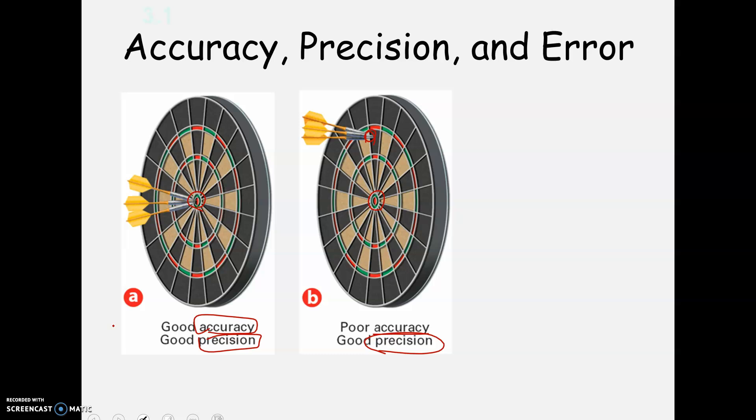But I think what you could have is you could have two people and they were both accurate, but one was more precise than another. In other words, we could both throw three darts and both of us hit close to the bullseye, but maybe one person's darts are more close to each other than the other. Then we would both technically have fairly good accuracy, but one of us would be less precise.